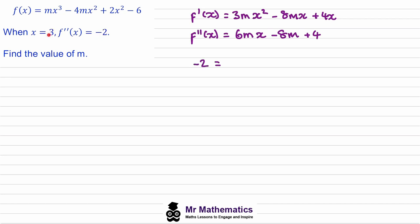We're told that f''(x) equals negative 2 when x equals positive 3, so we replace x with 3. We get 18m minus 8m plus 4 equals negative 2. Moving the positive 4 to the left-hand side gives 10m, so m equals negative 6 over 10, or negative 3/5.